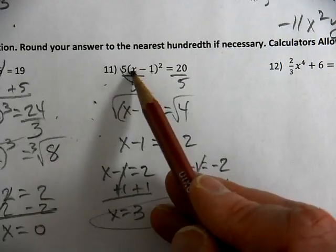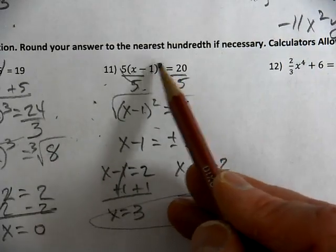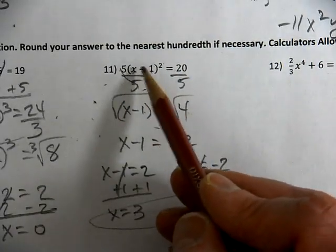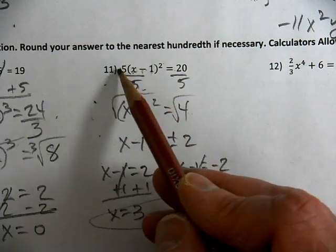When you plug in 3, you get 3 minus 1, which is 2, squared is 4, times 5 is 20. Plug in negative 1, negative 1 minus 1 is negative 2, squared is 4, times 5 is 20.